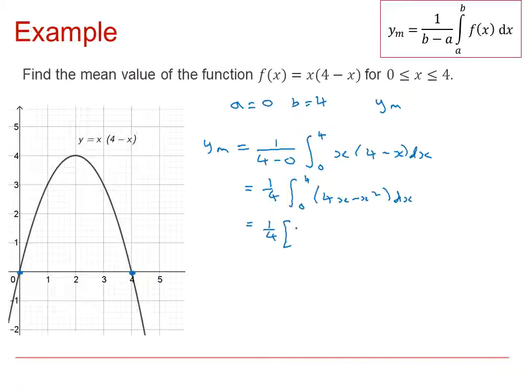Now we integrate to get 1/4 times [2x² - x³/3] from 0 to 4. Substituting the limits in, we get 1/4 times (2×16 - 4³/3) minus 1/4 times 0, which gives us a mean value y_m = 8/3.